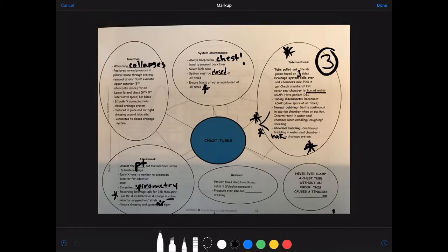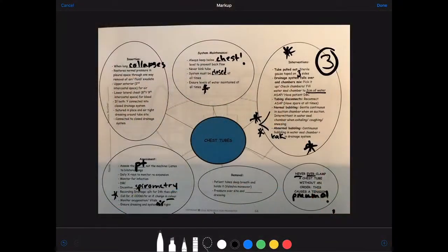Okay, important down here: never ever clamp a chest tube without a physician's order. This causes a tension pneumothorax and can be life-threatening. So on the registration exam it's a good rule of thumb, just never clamp the chest tube. And removal of a chest tube, for information purposes, the patient takes a deep breath and holds it—this is called the Valsalva maneuver. We pull the chest tube out and then we put pressure over the site and an occlusive dressing over top of that.